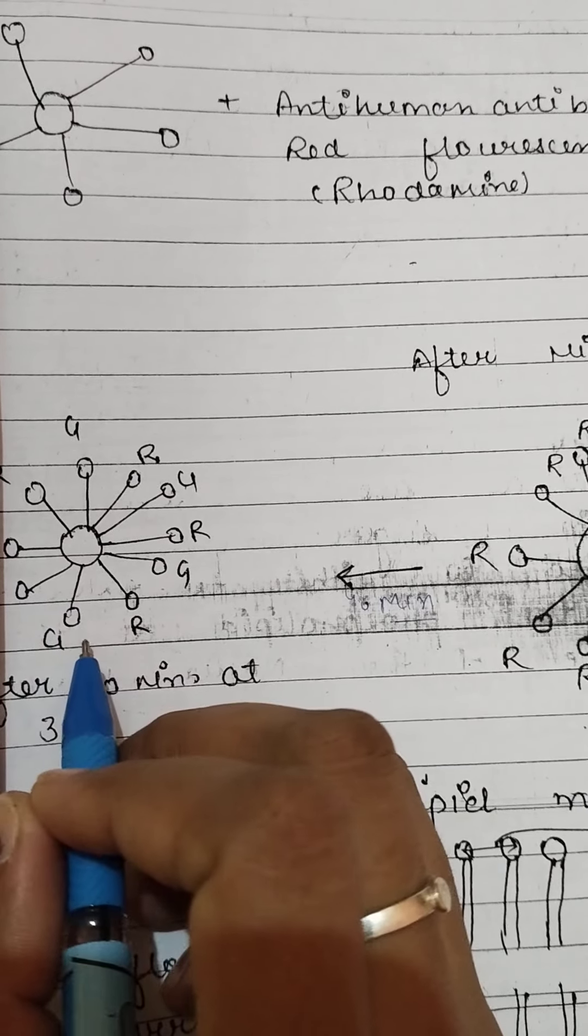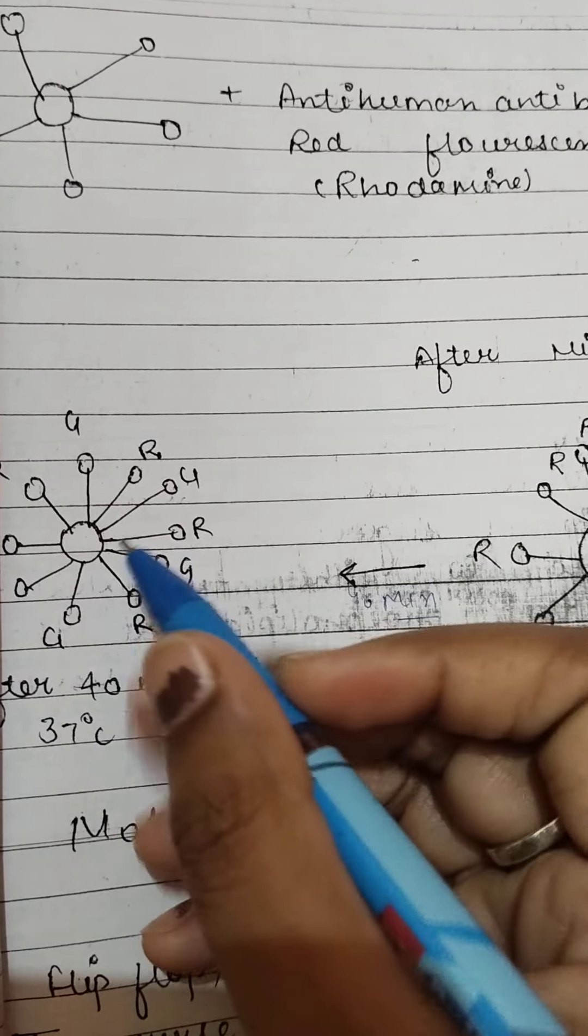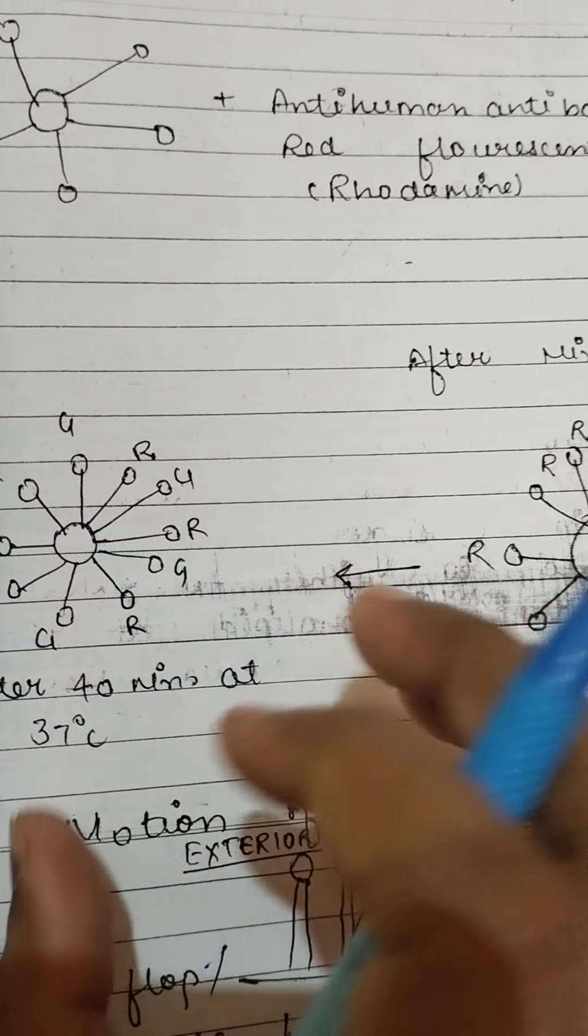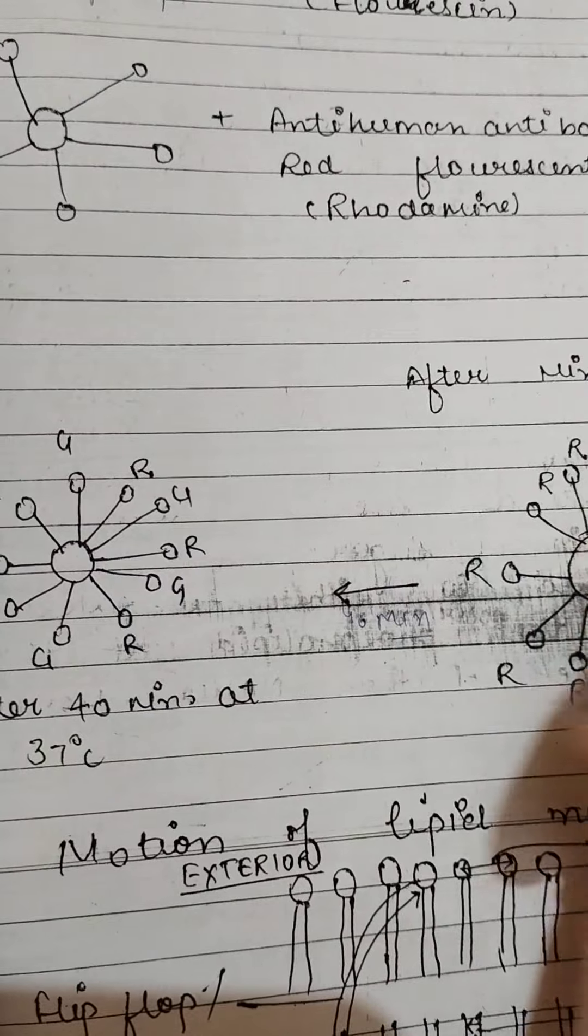Phospholipids alternate: green, red, green, red, green, red. This way shows that plasma membrane has fluid nature.